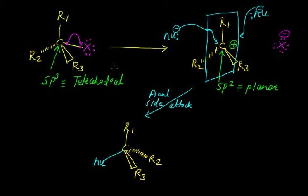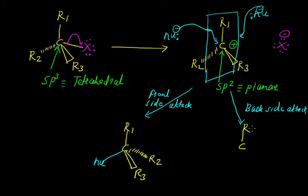The same nucleophile may also attack from the back side of this plane. In the case of a back side attack, we get a different product structure with R1, R2, R3, and the nucleophile attached from the opposite face.